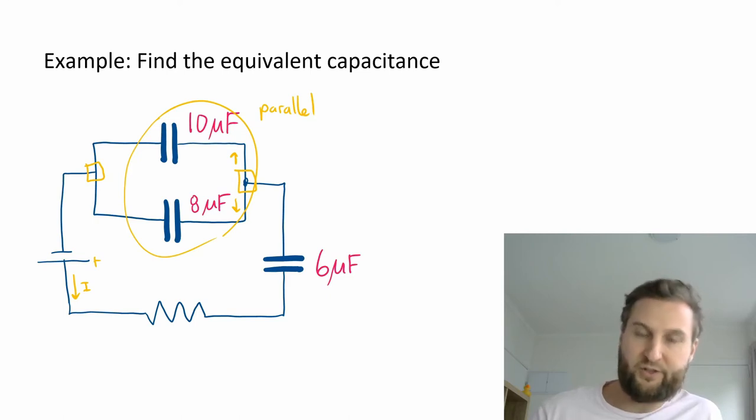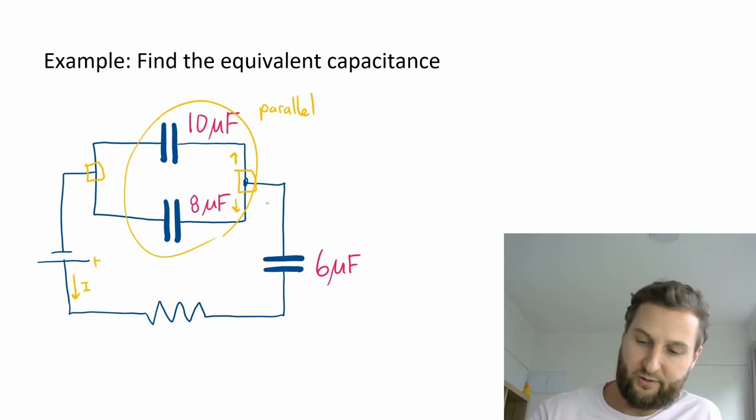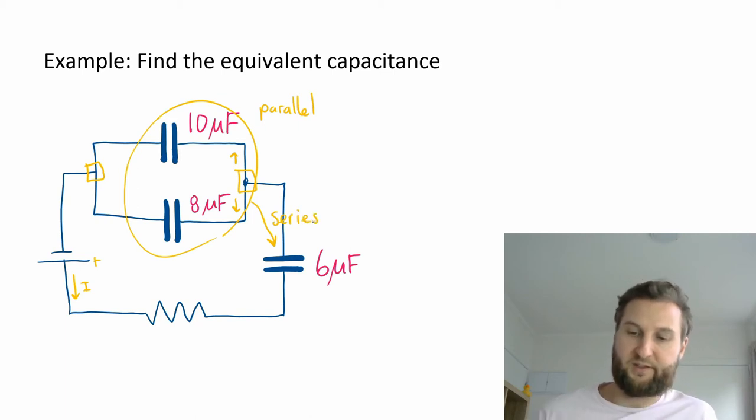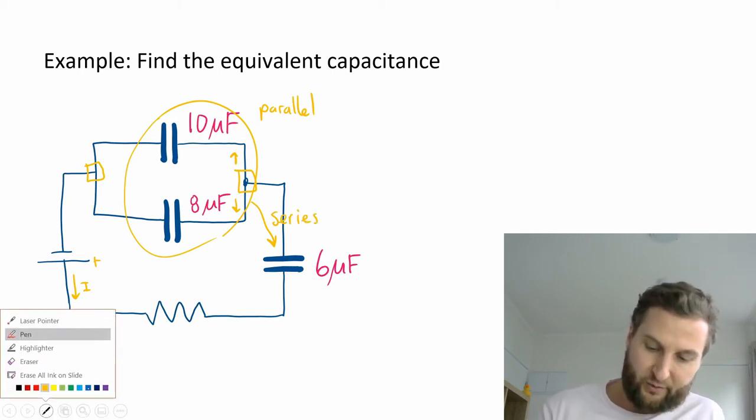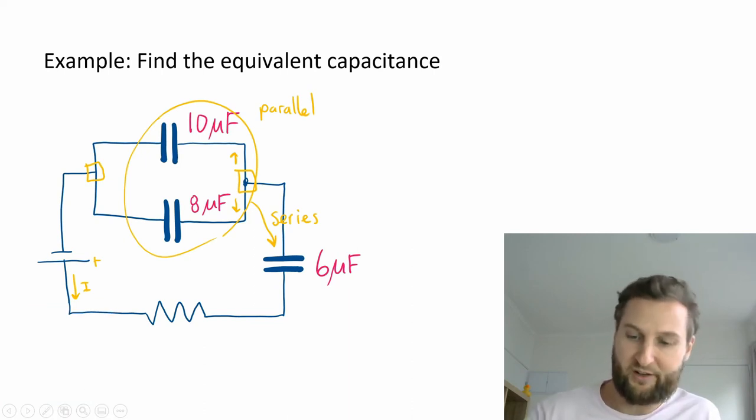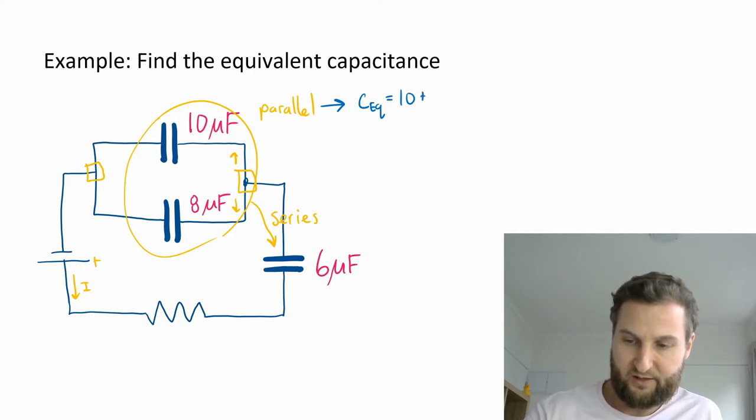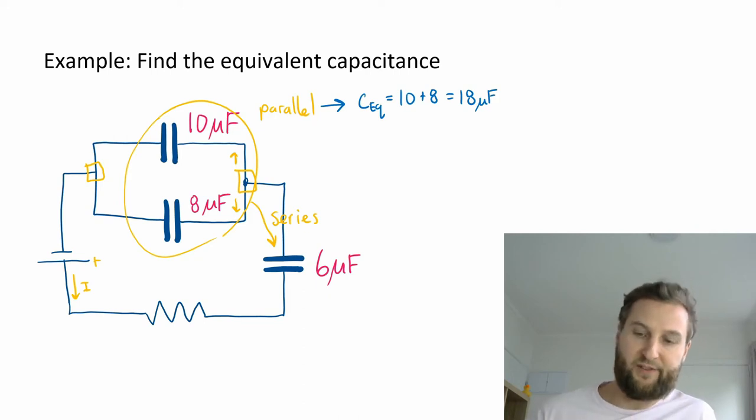And then afterwards, you could draw a new equivalent circuit, and these two are going to be in series with the six. So in parallel, that's actually the simple calculation. C equivalent is just 10 plus 8, which equals 18 microfarads, because the electrons can be discharged all at the same time and just come together like different tributaries in a river. So that's 18 for those two in parallel.